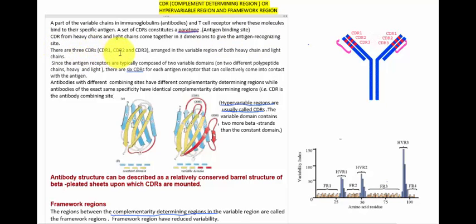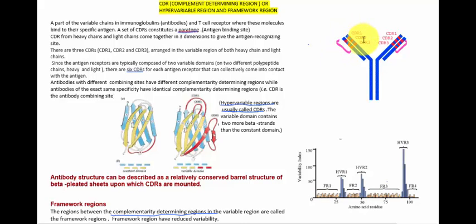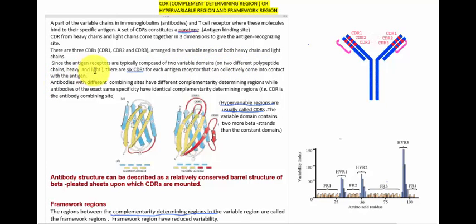There are three CDRs — CDR1, CDR2, and CDR3 — which are arranged in the variable region of both heavy chains and light chains. This is the variable part of the light chain and this is the variable part of the heavy chain, so in the variable part three CDRs are present. In total, across the light chain and heavy chain, six CDRs are present. Since the antigen receptors are typically composed of two variable domains on two different polypeptide chains — heavy and light — there are six CDRs for each antigen receptor that can collectively come in contact with the antigen. Antibodies with different combining sites have different complementary determining regions, while antibodies of the exact same specificity have identical complementary determining regions.